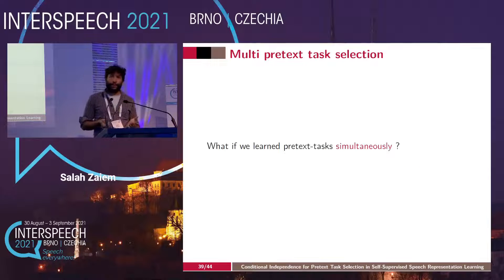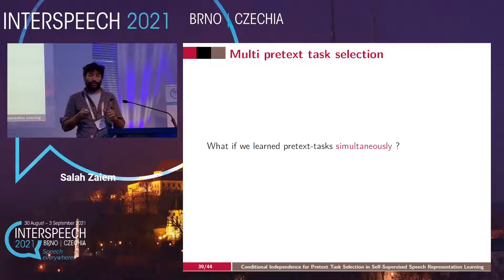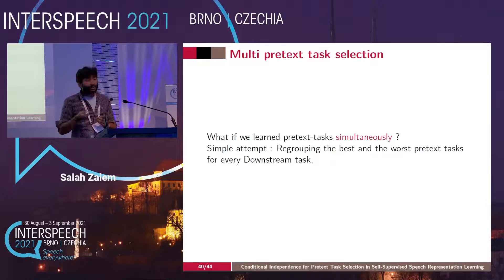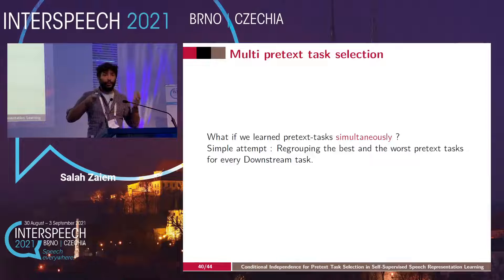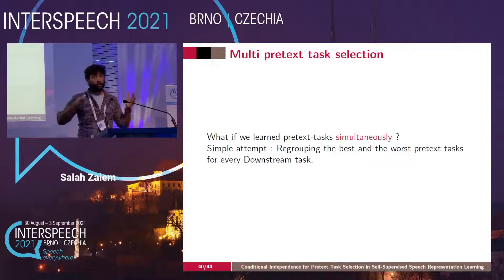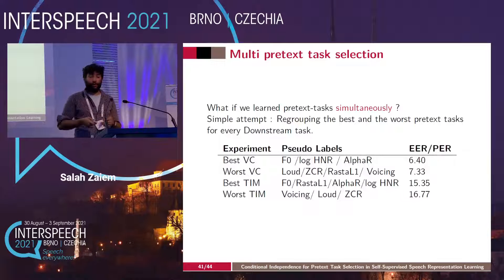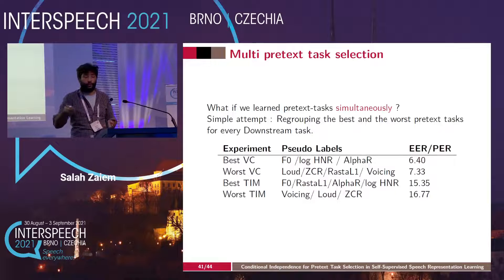In another quick experiment, in the Pace model we don't predict solo labels uniquely — we predict multiple pretext tasks simultaneously. We tested the robustness of our estimator by grouping: taking the best pretext tasks for ASR, the best for speaker recognition, and the worst ones, then checking if the ordering still holds. Unsurprisingly, it still works — the experiments with the best solo labels yield lower equal error rates and phone error rates than those with the worst ones.